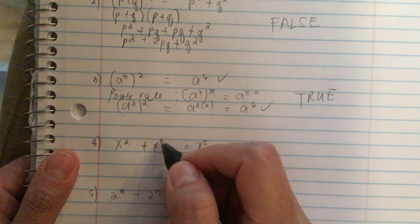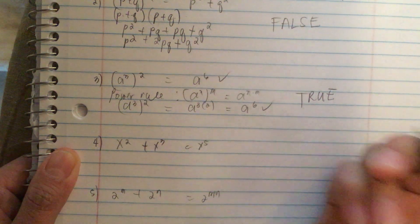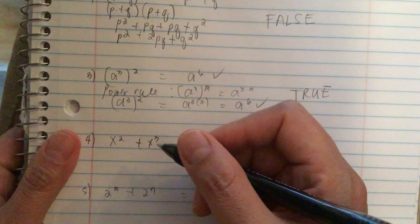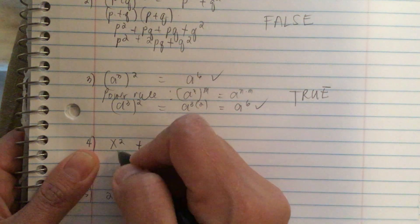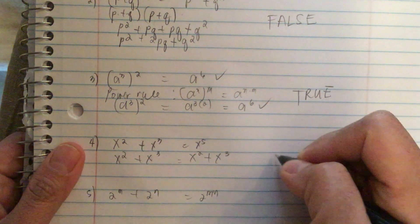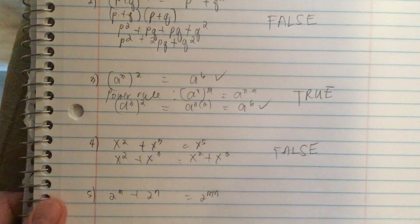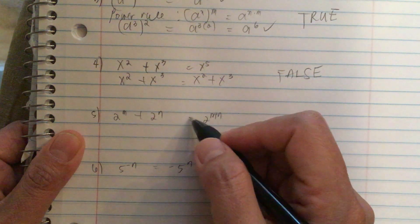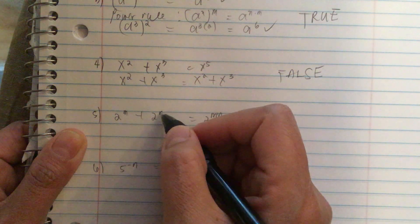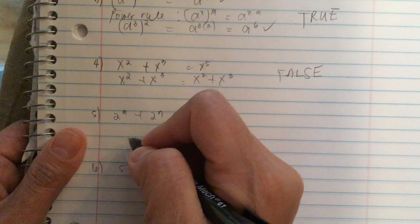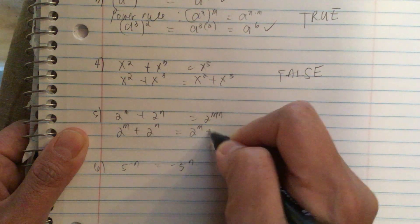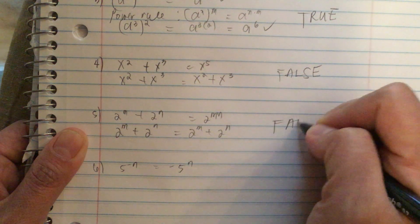Does x² + x³ equal x⁵? We can only combine like powers, so x² + x³ remains x² + x³. This is false. Similarly, does 2ᵐ + 2ⁿ equal 2^(mn)? Again, we cannot combine unlike exponents, so 2ᵐ + 2ⁿ stays as 2ᵐ + 2ⁿ. This is also false.